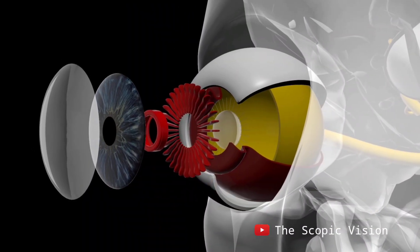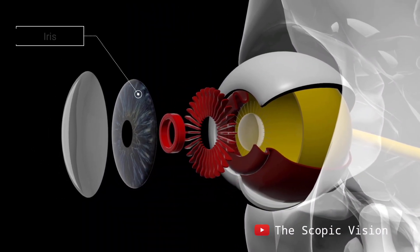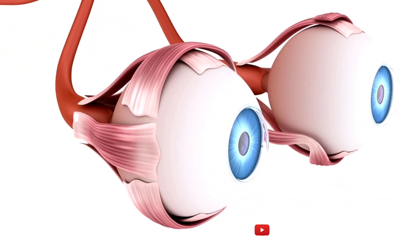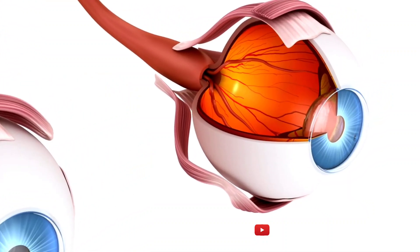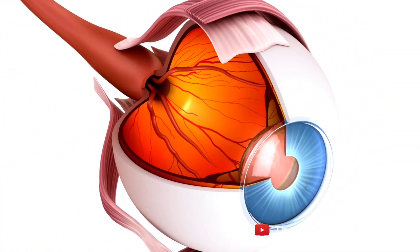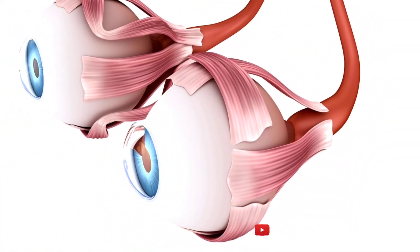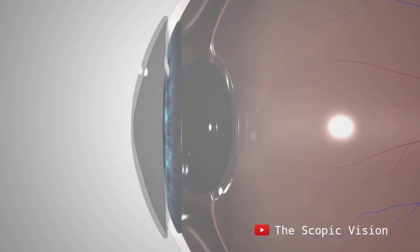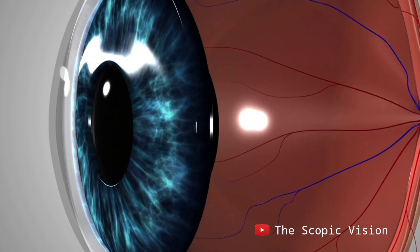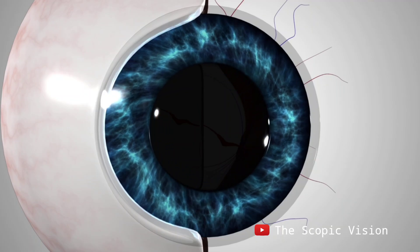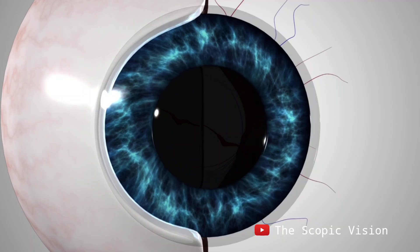The iris, visible from the outside, controls light entry and is of different colors in different people. The anterior segment is divided into the anterior and posterior chambers with fluid secreted by epithelial cells of the ciliary body. The color of the iris is due to pigments present inside. At the center of the iris is an aperture called the pupil, through which light enters the eye.